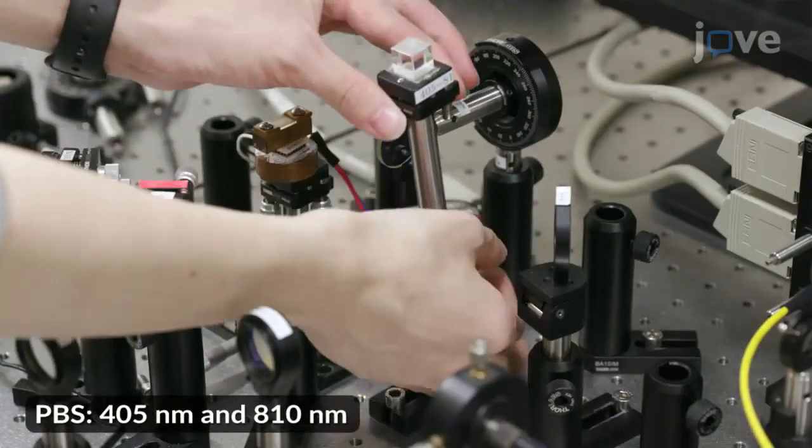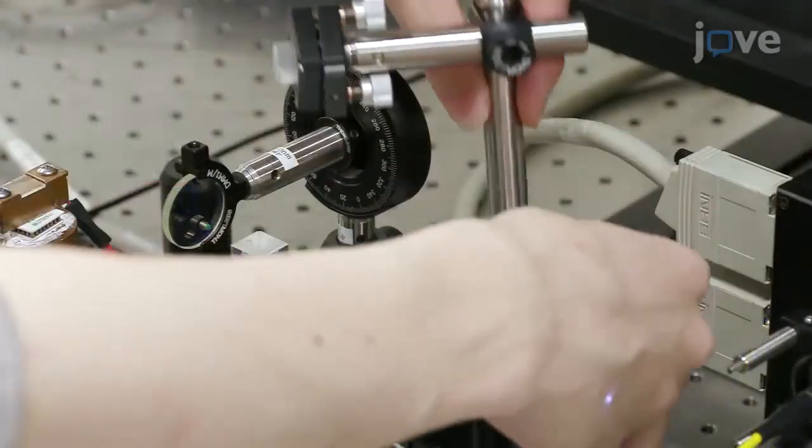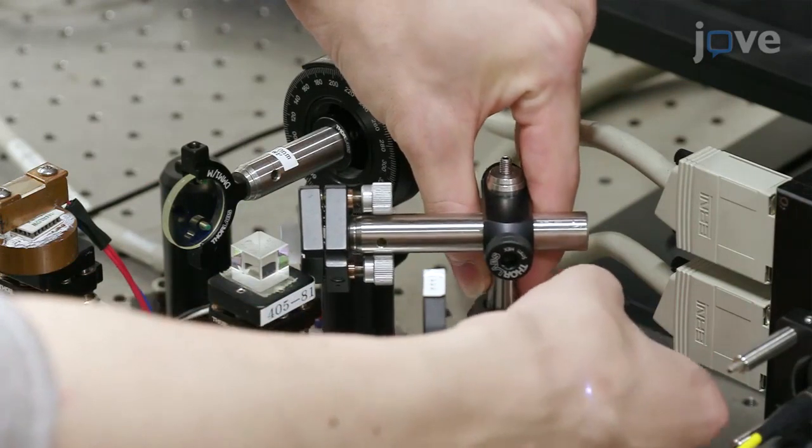Next, place a short-pass dichroic mirror and a polarizing beam splitter cube in the path of the beam. Use a regular mirror to direct the reflected S-polarized beam parallel to the transmitted P-polarized beam.